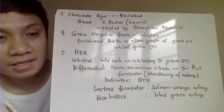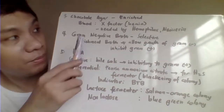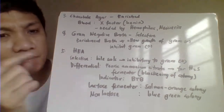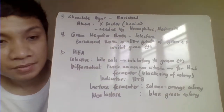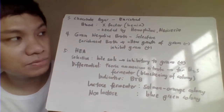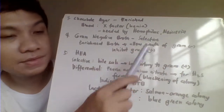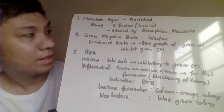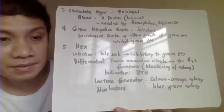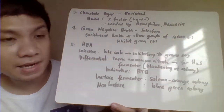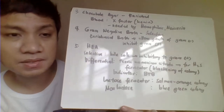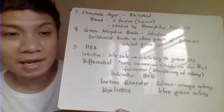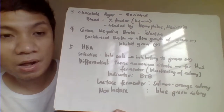Chocolate agar is considered enriched because it contains blood. The blood provides the X factor (hemin) and NAD (V factor), which are growth factors needed by Haemophilus and Neisseria. Haemophilus is considered fastidious because it requires hemin and other factors to grow.